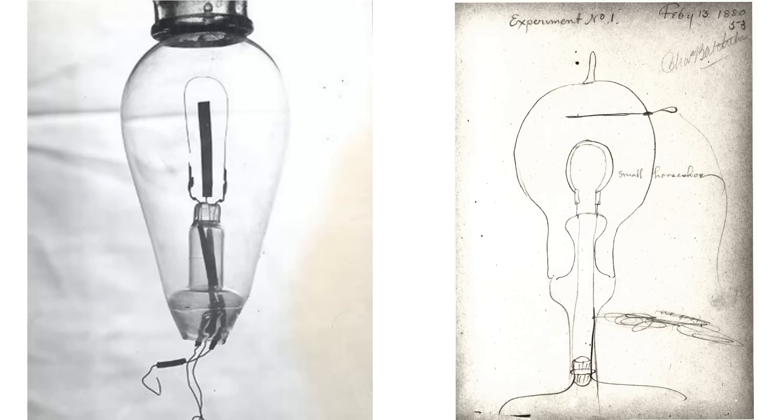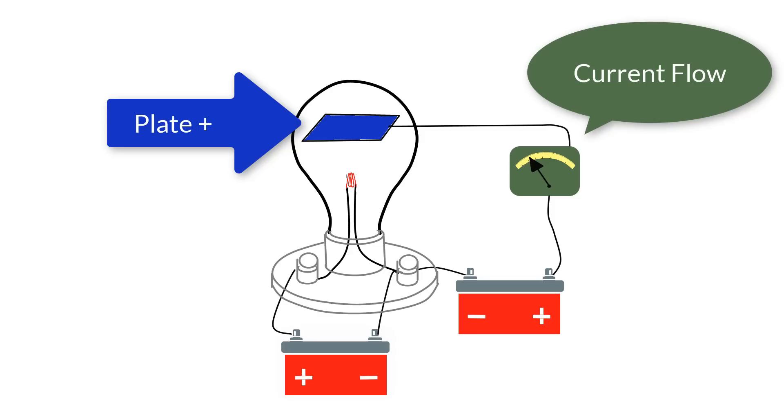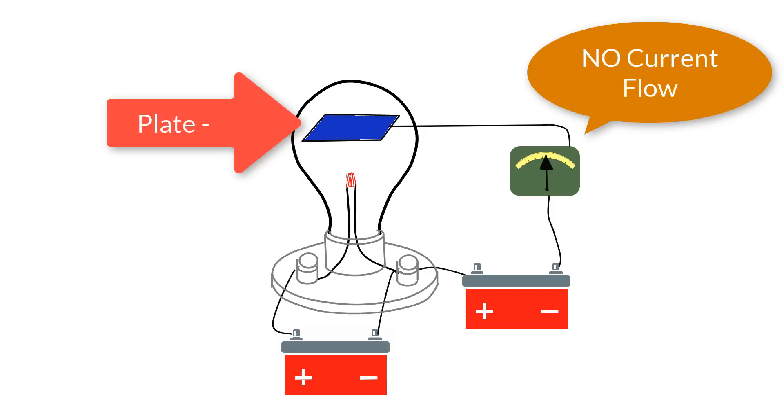He then added a plate to the bulb with the hope that whatever was emanating from the filament would stick on the plate and possibly keep the filament from breaking in the first place. The plate turned out to be not much help. However, he noticed that if he added another battery between the filament and the plate, something strange happened. The current could flow if the plate was positive, but would not flow if the plate was negative.